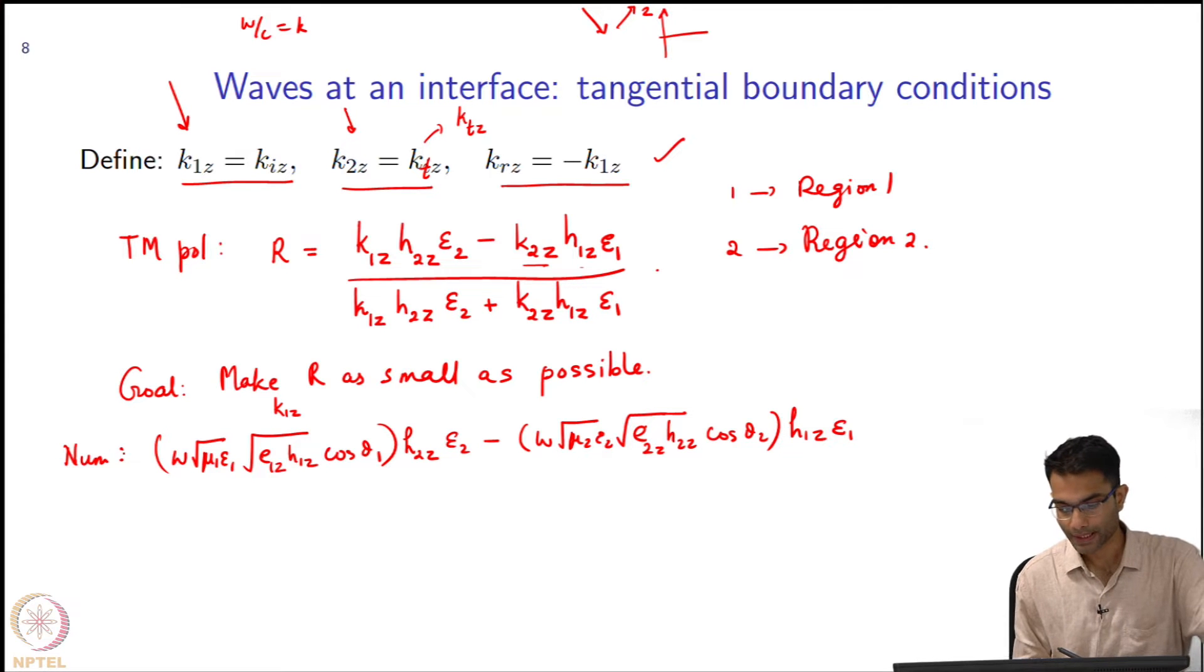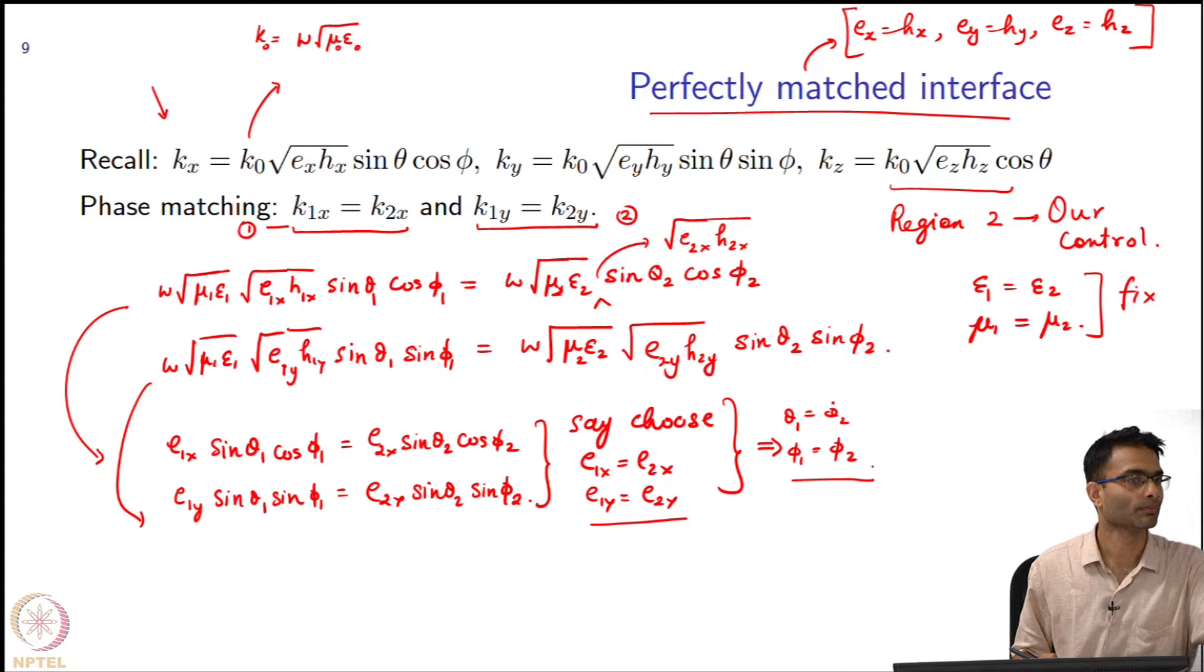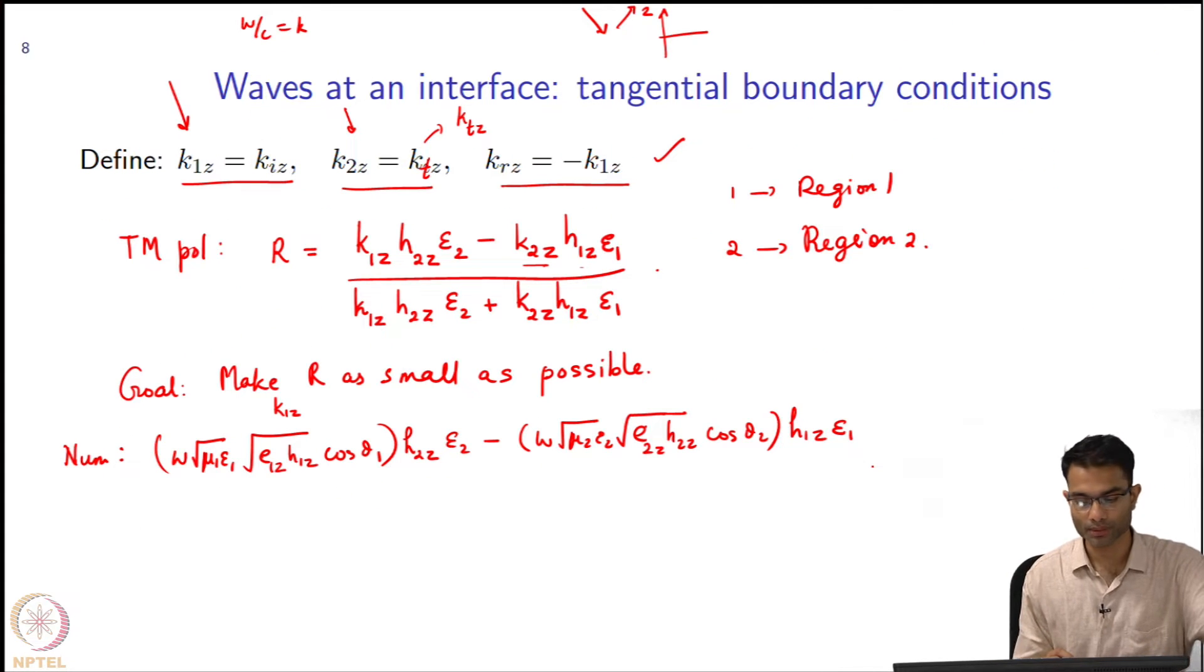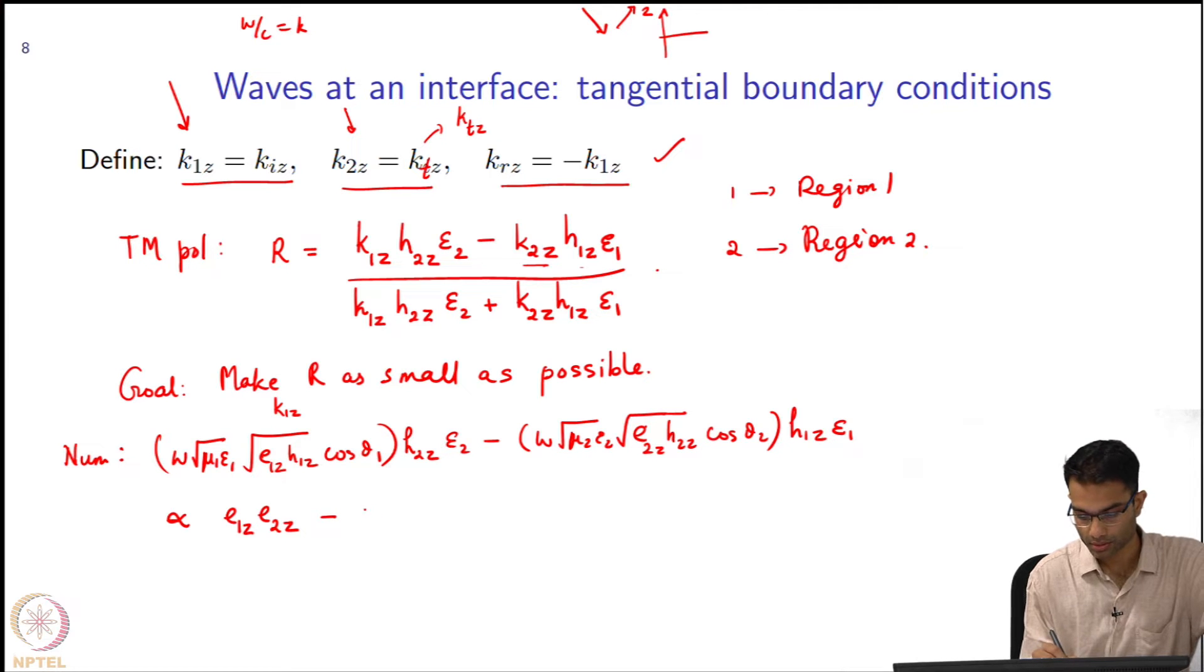Now, we are nearly there by choosing e1x equal to e2x, e1y equal to e2y, I get to fix the angles to be equal. In this expression what comes out common? This simplifies to proportional to square root of e1z h1z, and e1z equals h1z. So I can call this simply e1z h2z is the same as e2z. So this is e2z minus e2z h1z, less h also we will call it as e only.